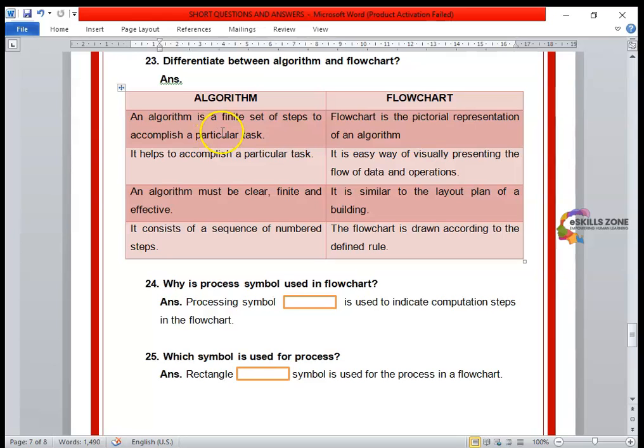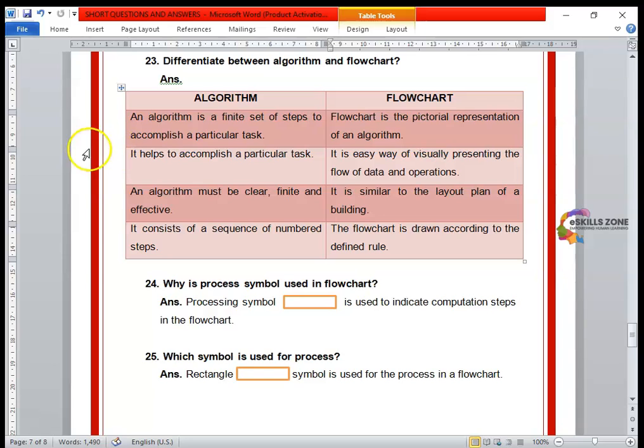An algorithm is a finite set of steps to accomplish a particular task, whereas flowchart is the pictorial representation of an algorithm. Next point: it helps to accomplish a particular task. Algorithm. It is an easy way of representing the flow of data and operations.